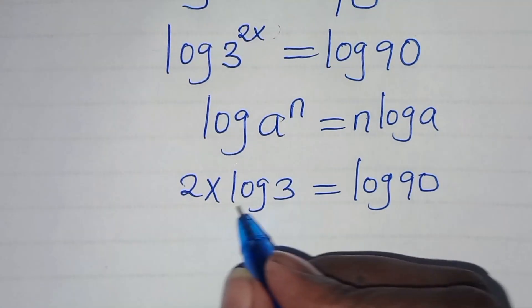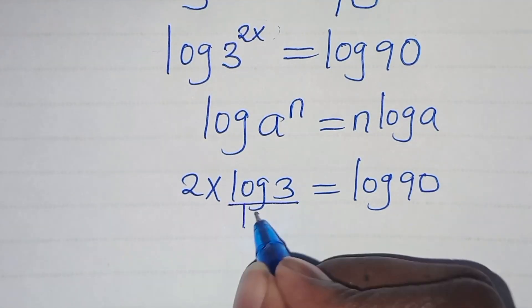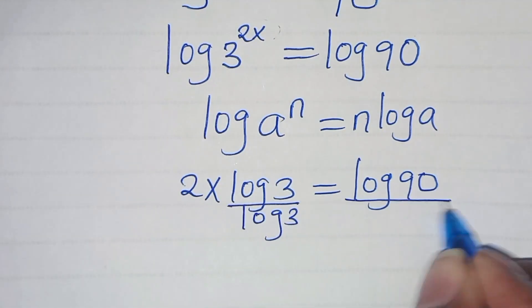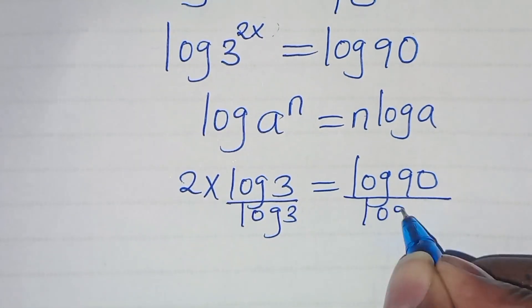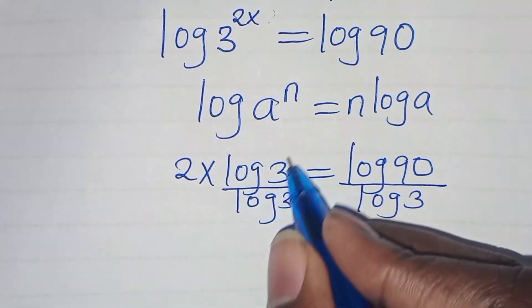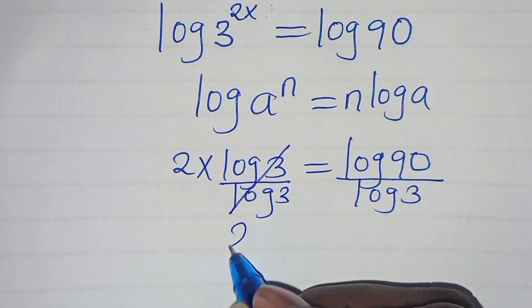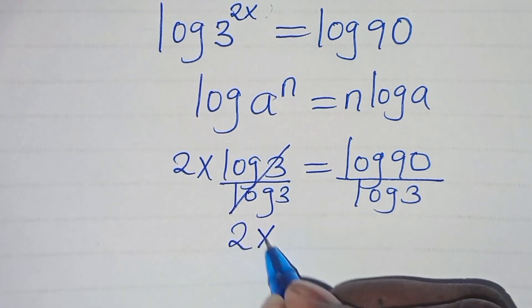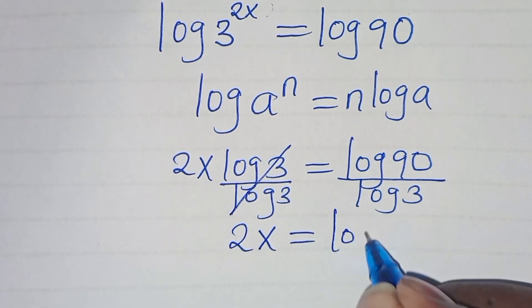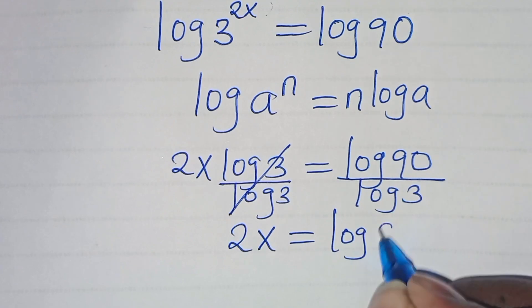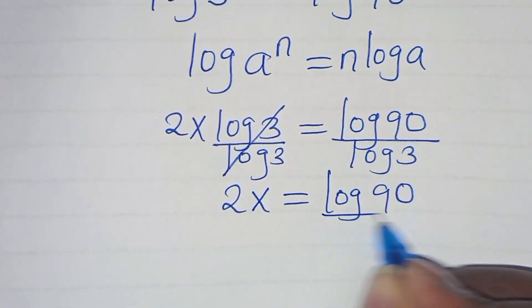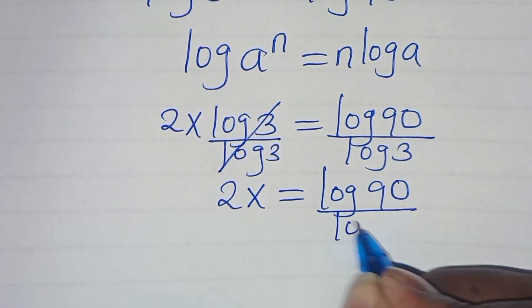So let's divide both sides by log 3, so that now we simplify — here we have 2x is equal to log 90 divided by log 3.